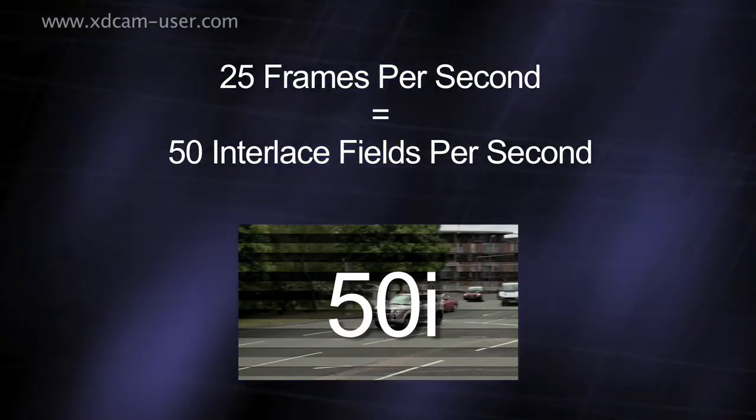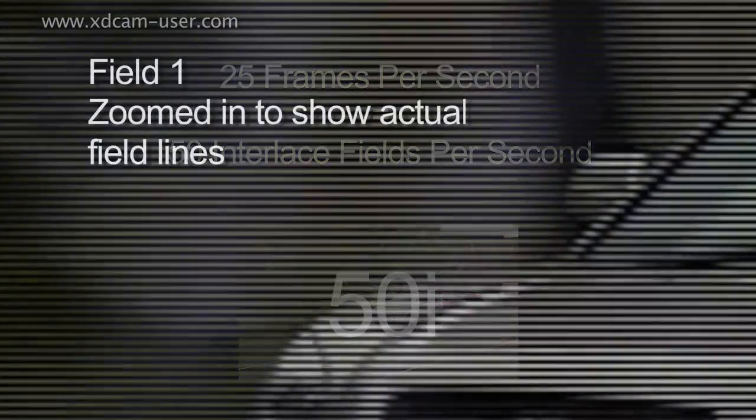One field is made up of the odd-numbered lines within the frame, and the other field is made up of the even-numbered lines, and when played back one after the other, they make up a frame.